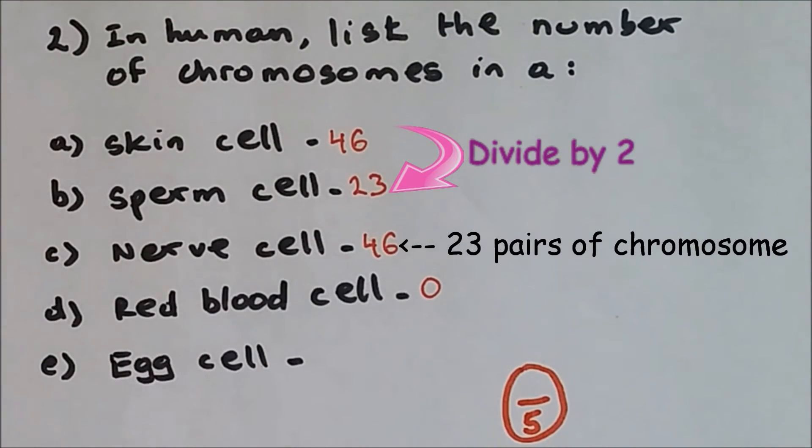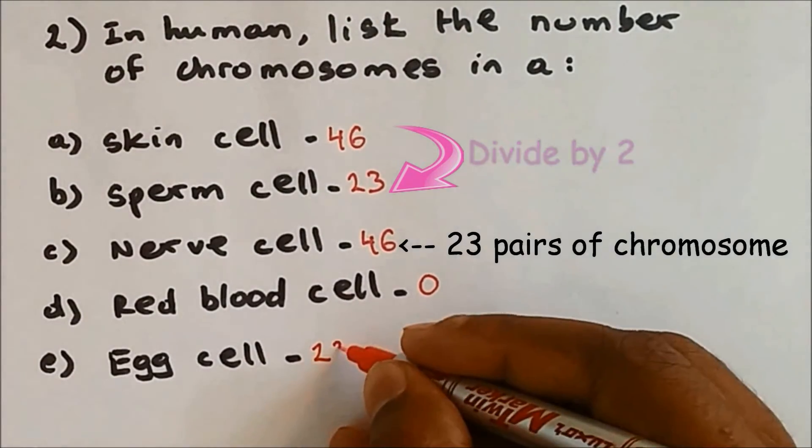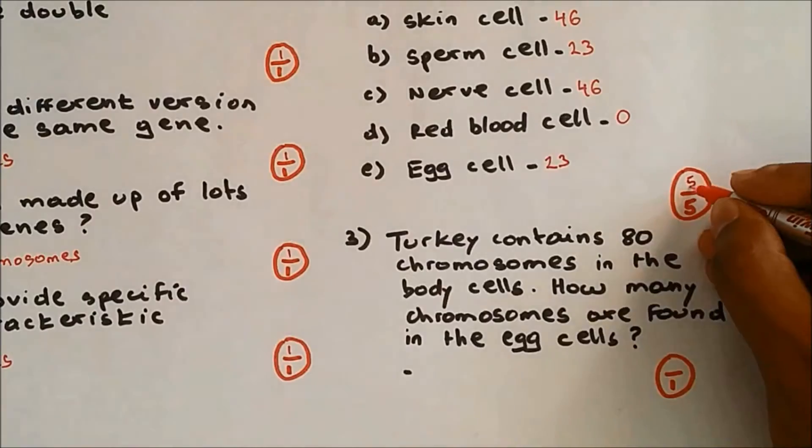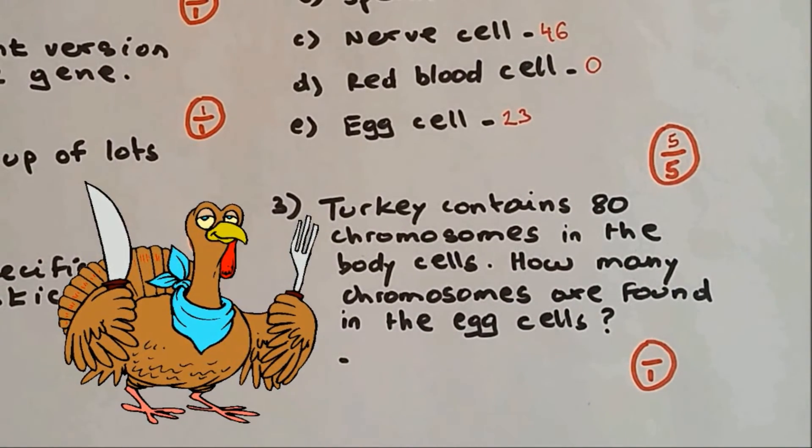An egg cell obviously is a sex cell or gamete, so it contains half the number of chromosomes as normal body cells. Therefore it contains 23 chromosomes. Turkey, the one that we use for Christmas, contains 80 chromosomes in the body cells.